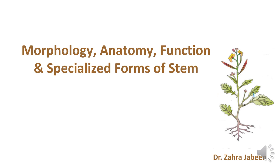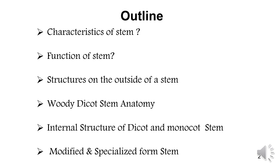In this lecture we will talk about the morphology, anatomy, function and specialized forms of stem. First we will learn about the different features and functions of stem. Then we will study the structure on the outside of stem and the woody dicot stem anatomy. Then we will learn about the internal structure of dicot and monocot stem. At the end, we will discuss the modified and specialized forms of stem.